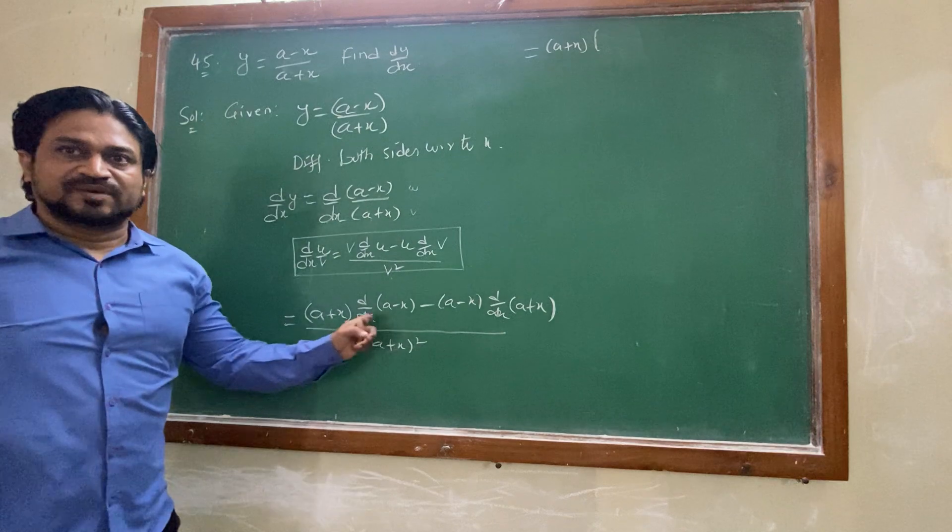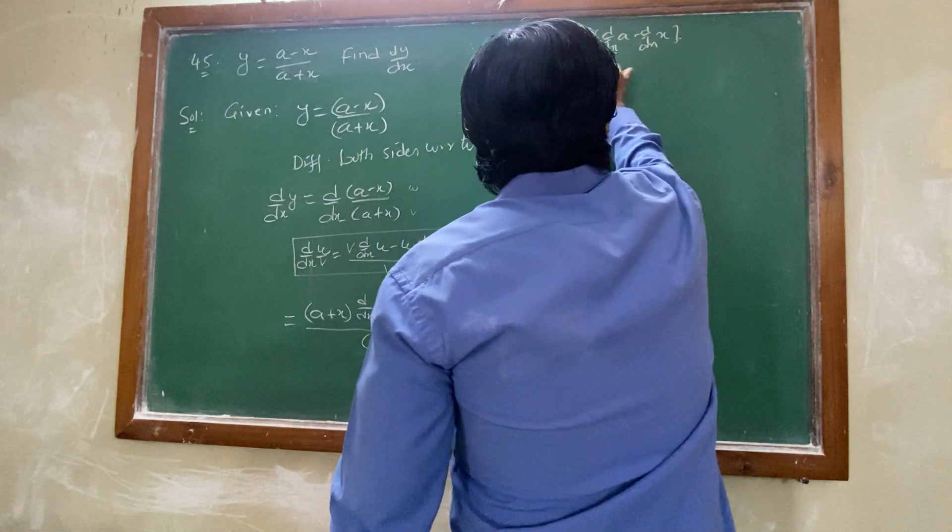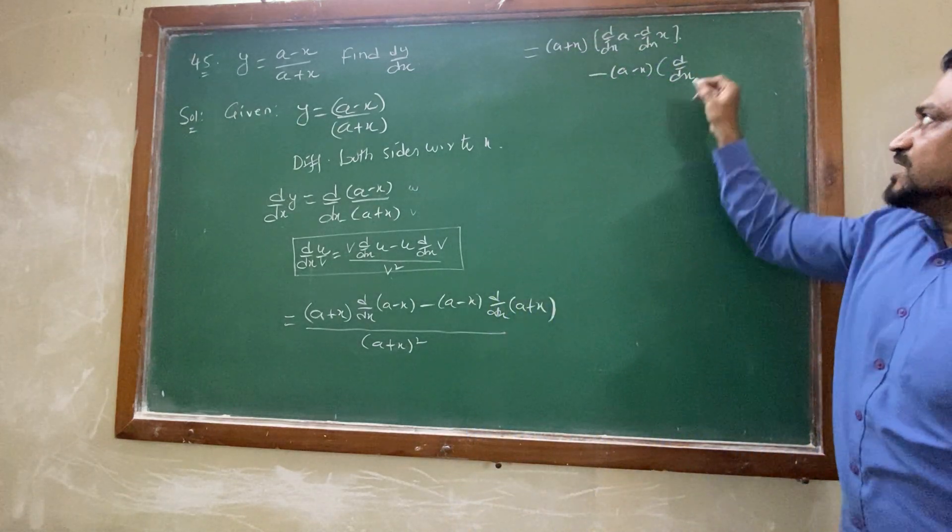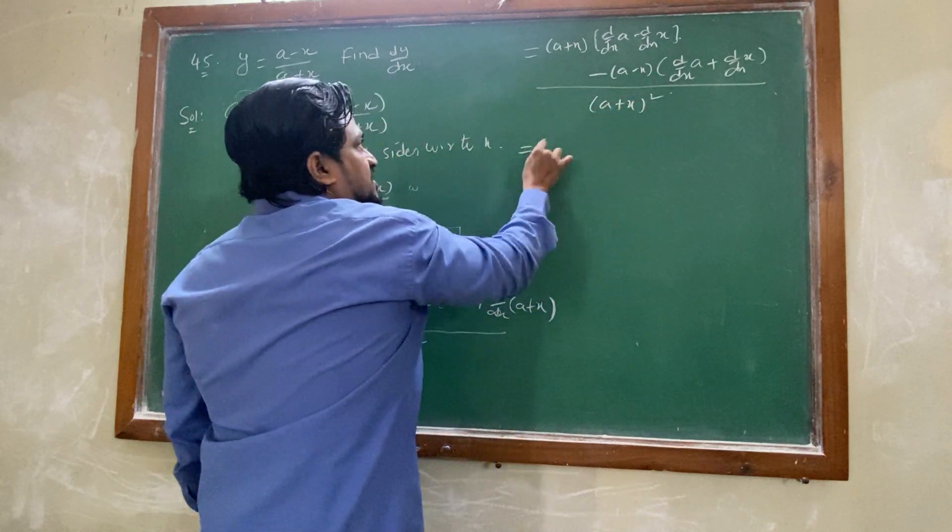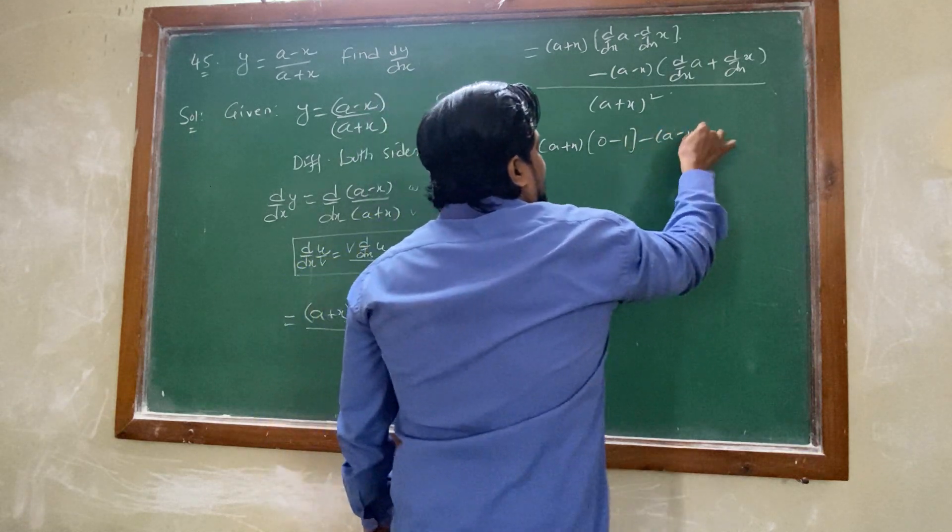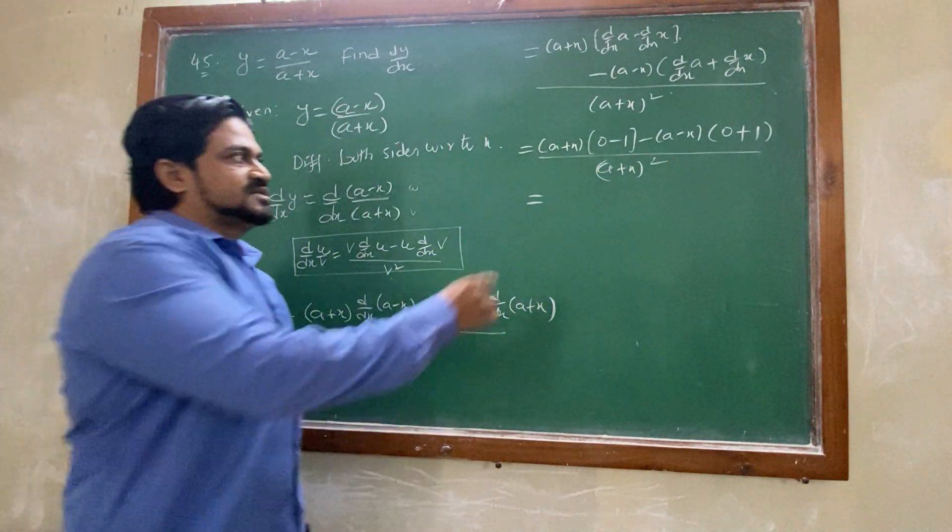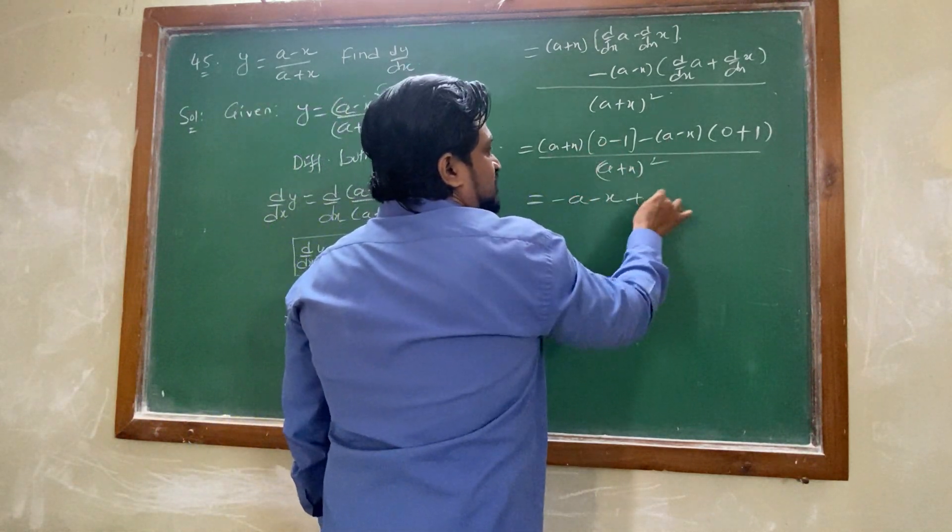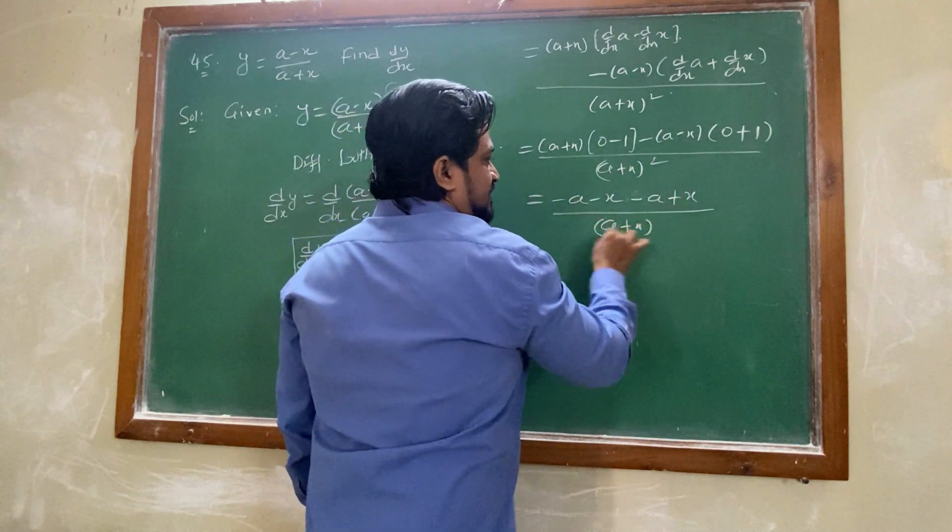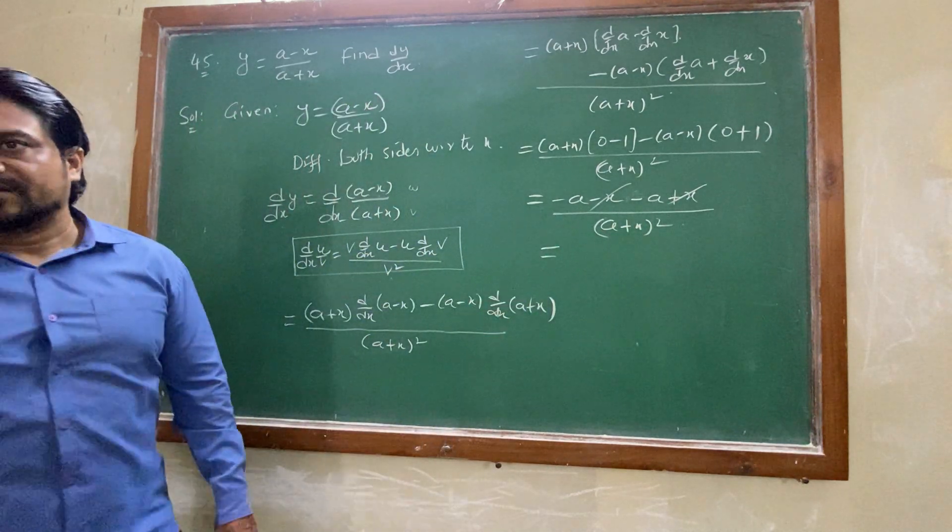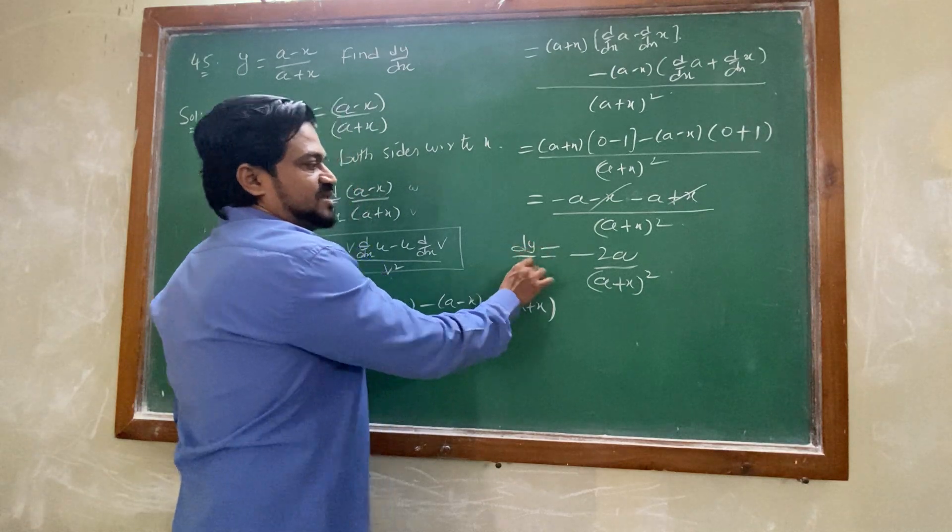Then dy by dx is there before the bracket. So this dy by dx should be given to both of them. dy by dx of a minus dy by dx of x. The next one is minus a minus x into this value also. So dy by dx of a, bracket close, divided by a plus x whole square. a plus x into 0 minus 1, a minus x into 0 plus 1. Now we have to simplify this one. So a plus x into minus 1 gives minus a minus x. Minus a plus x. Minus plus cancel. This is dy by dx. Check whether the same thing is there with you or not.